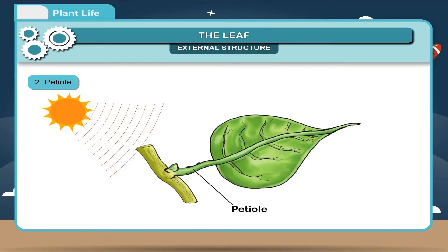Petiole. It is a stalk by which the leaf is attached to the stem of a plant. The petiole extends in the leaf blade as a midrib and joins the leaf to the stem. Its main function is to keep the leaf in such a position so that it gets maximum sunlight and air.